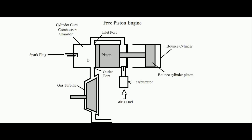When the two-stroke engine piston moves to and fro — right and left — the same motion is executed by the bound cylinder piston as well. This piston is meant for the two-stroke engine side and that piston is meant for the bound cylinder side. There is also a non-return valve which is connected to a duct, and that duct is connected to a carburetor. The carburetor makes the mixture of air and fuel — in the case of a petrol engine, the fuel is petrol.